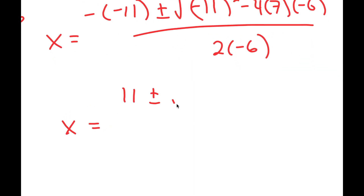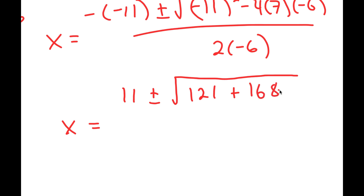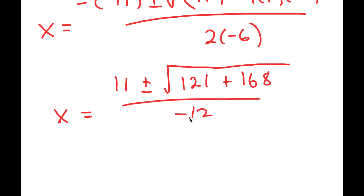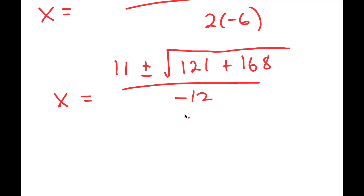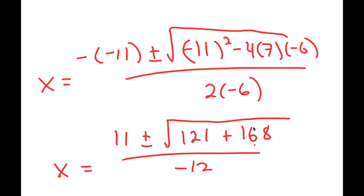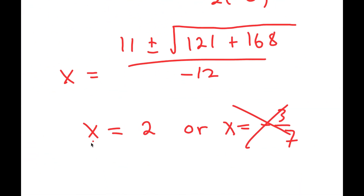This simplifies to 11 plus or minus the square root of 121 plus 168, all over 14. Solving this out, I get x equals 2 or x equals negative 3/7. However, x can't be a negative number because a length can't be negative, so my only solution is x equals 2.